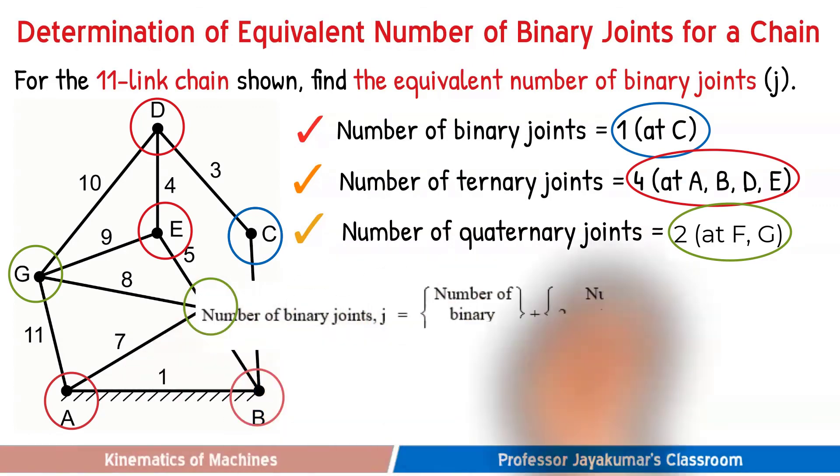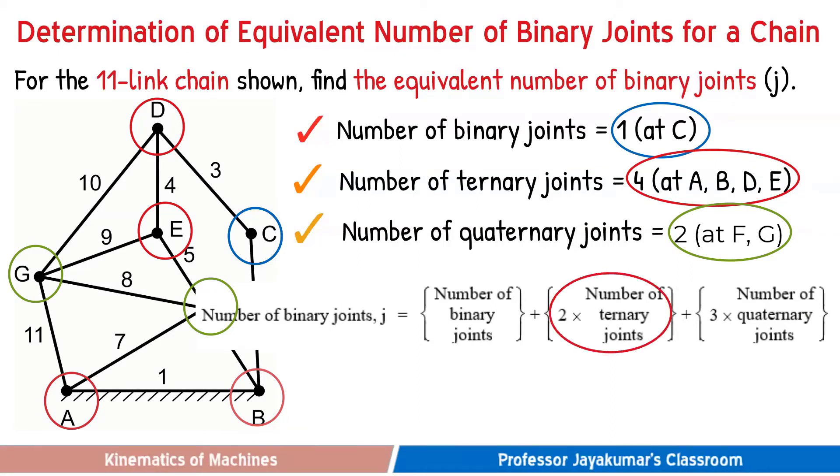Now let us determine the number of binary joints. We know that one ternary joint is equivalent to two binary joints, so I will multiply the number of ternary joints by two. Also, we know that one quaternary joint is equivalent to three binary joints, so I will multiply the number of quaternary joints by three in order to get the equivalent binary joints. Hence, as shown, we will get 15 binary joints for the given chain.